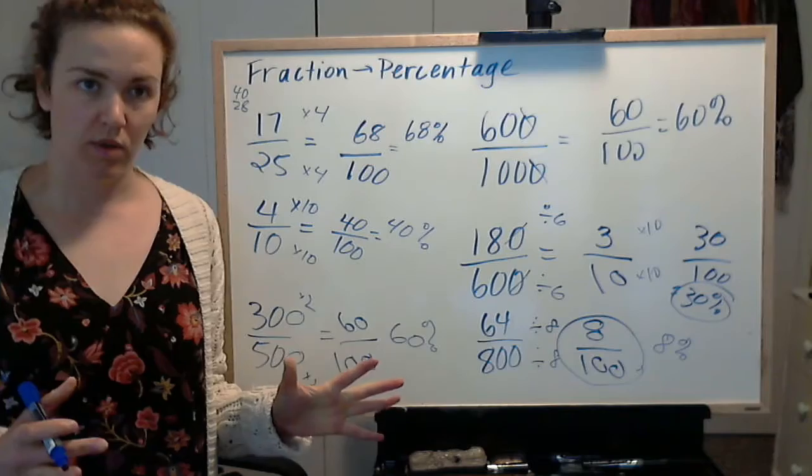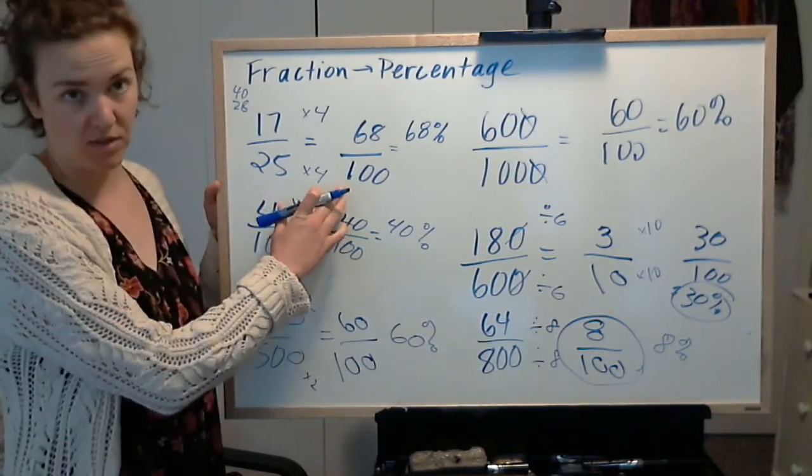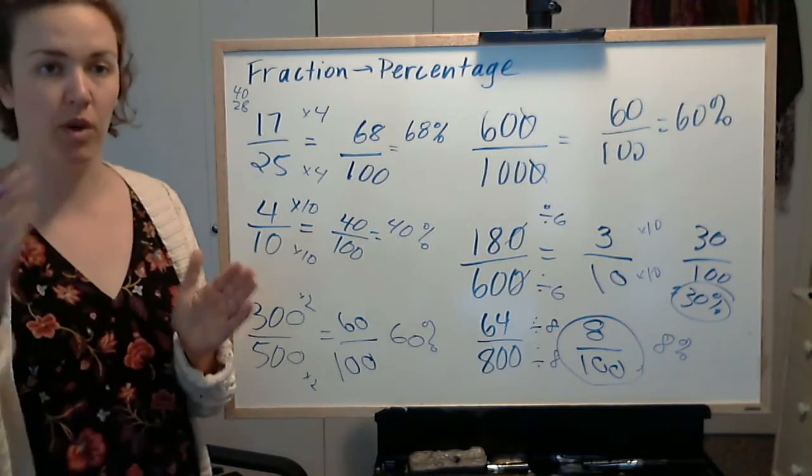So your end goal is to convert your fraction so your denominator is 100. But it might be easier to just simplify down to the simplest form and then work back up to 100.